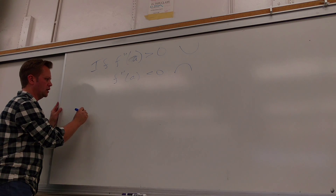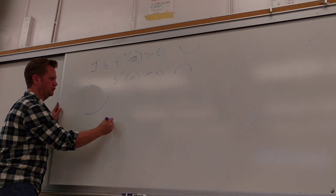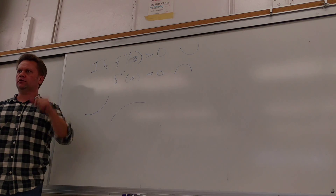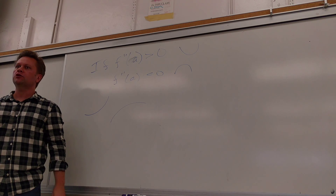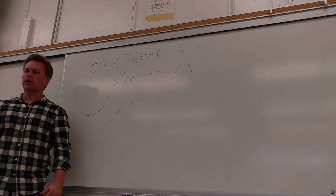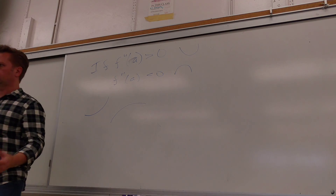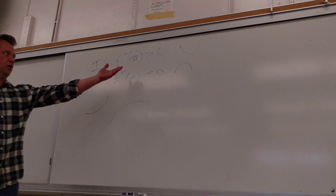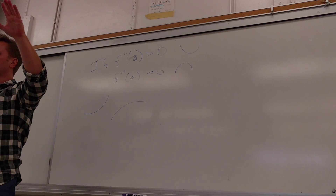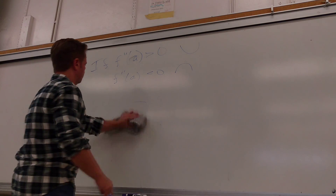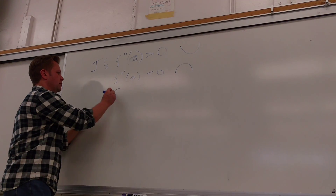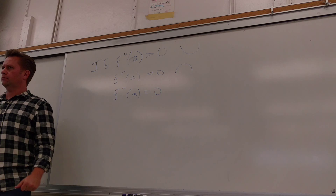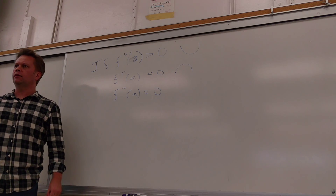Somebody help me out — if f double prime of some value of x is greater than zero, then what does that mean? Concave up, so it would look like a U shape around that point. If f double prime of a is less than zero, it would be concave down. The second derivative measures curvature — what we call concavity. The first derivative measures increase and decrease; the second derivative measures curvature.